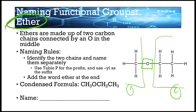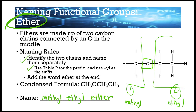Naming a one-carbon branch is methyl. Naming a two-carbon branch is ethyl. So we have methyl, ethyl, and then the last step is to add the word ether — so this compound would be called methyl ethyl ether. It doesn't matter which one you have first, as long as you have both of them.